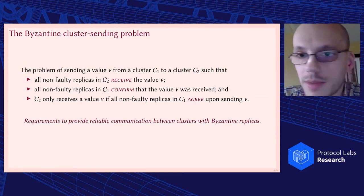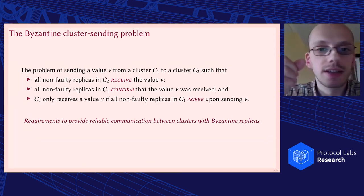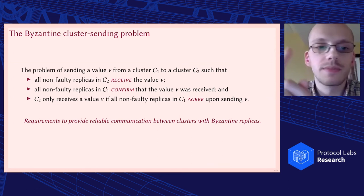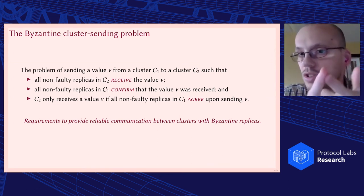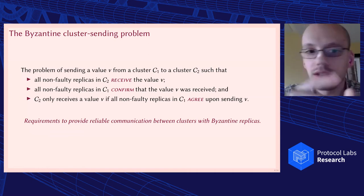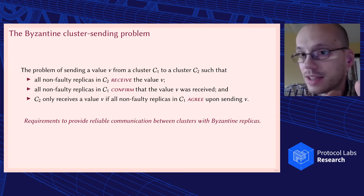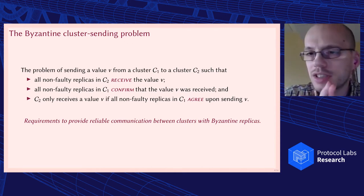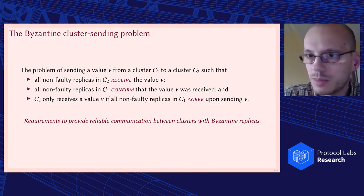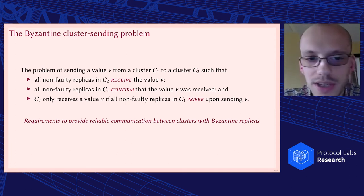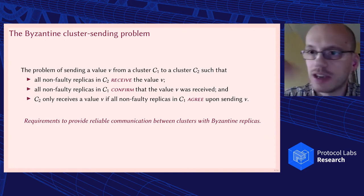So our first step was to just formalize it as simple as we could. How do we formalize cluster sending? We have a value V, and we have a cluster 1 and a cluster 2. Those are Byzantine fault-tolerant, they can have faulty replicas in them. And we want to send a value from C1 to C2 with three guarantees. The replicas in cluster C2 will receive that value, at least all the good replicas. The replicas in the sending cluster will get some confirmation that they know that sending was successful. And the receiving cluster will only receive a value if that value was actually intended to be sent. So faulty replicas should not be able to forge a message sent to the other cluster. We figured that this is basically the most basic requirements you can get for any form of communication if faulty replicas are involved.